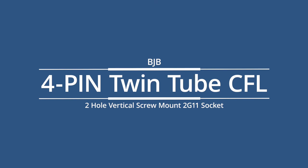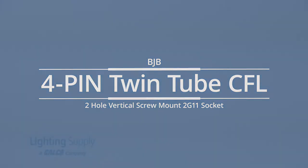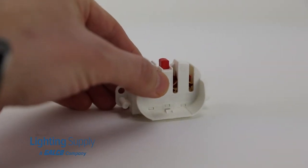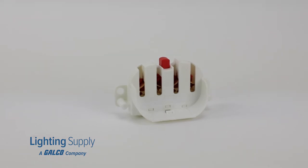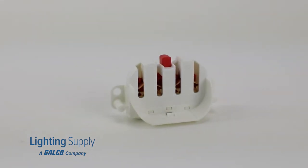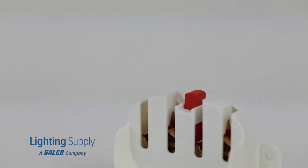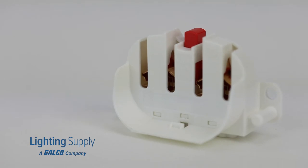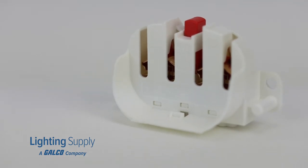Welcome to this LightingSupply.com product detail video. Today we will be looking at the 4-pin twin tube CFL two-hole vertical screw mount 2G11 socket from BJB. These can serve as a replacement for old sockets or can help you finish a new lighting project.